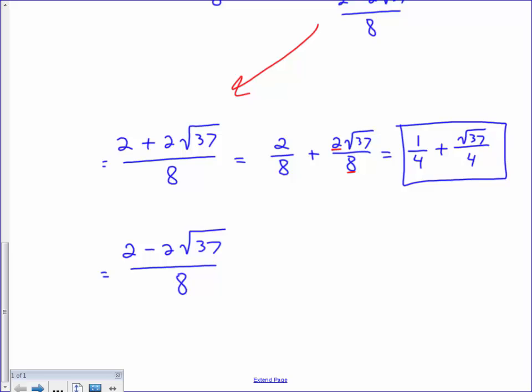So there is that one. And then down here, do the same thing. Split it up. Say 2 over 8 minus 2 roots of 37 over 8, and then reduce. So 2 over 8 would be 1 fourth minus the 2 over 8 on the second one would also be 1 fourth, but I'd be left with the root of 37 on the top and just the 4 on the bottom.